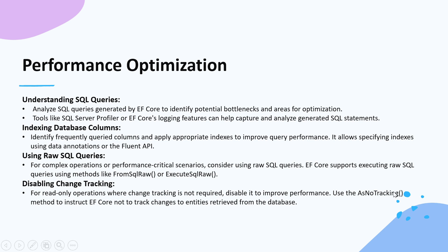EF Core supports executing raw SQL queries using methods like FromSqlRaw or ExecuteSqlRaw. Another important point is disabling change tracking for read-only operations where change tracking is not required — disable it to improve performance. Use the AsNoTracking method to instruct EF Core not to track changes to entities retrieved from the database.